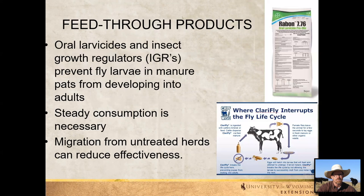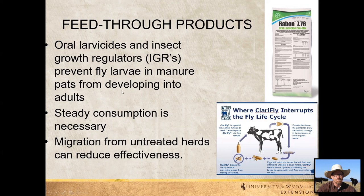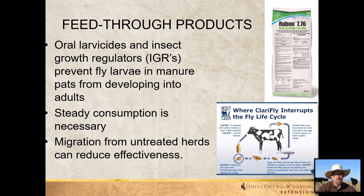There are also fed-through products — oral larvicides and insect growth regulators, or IGRs — with several manufacturers. For example, Rabon 7.76 is a pre-mixed product. Steady consumption is necessary for these to work. One thing to remember with any product: these flies can migrate from your neighbors, so sometimes your problems may be coming from elsewhere even if you're on top of your own management.